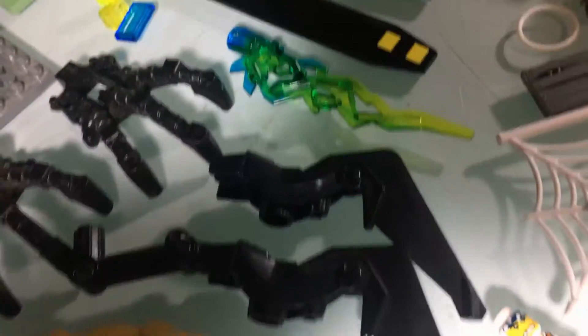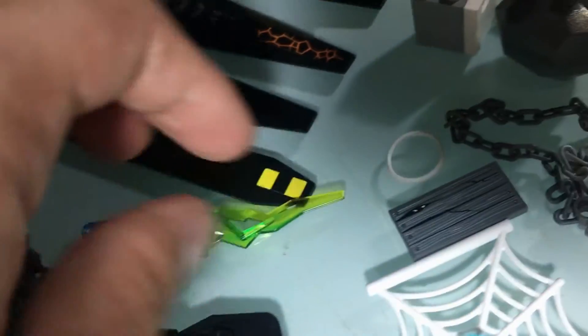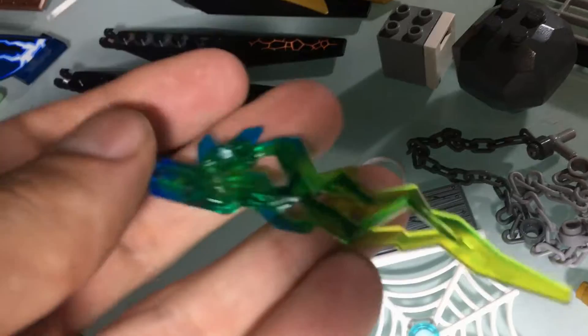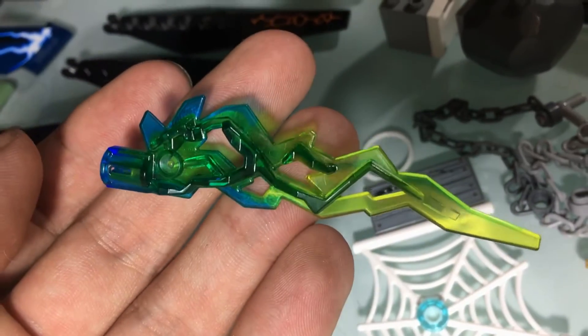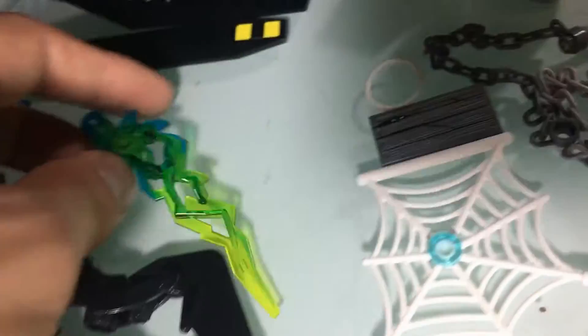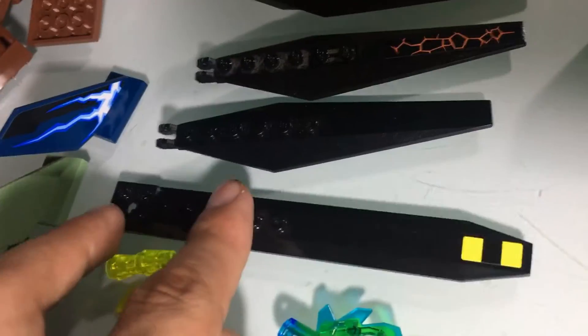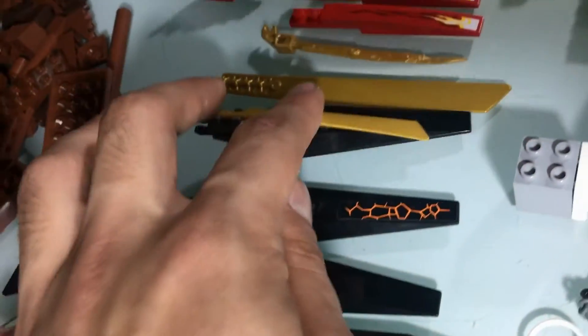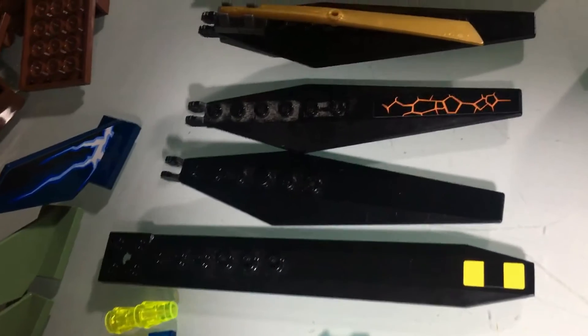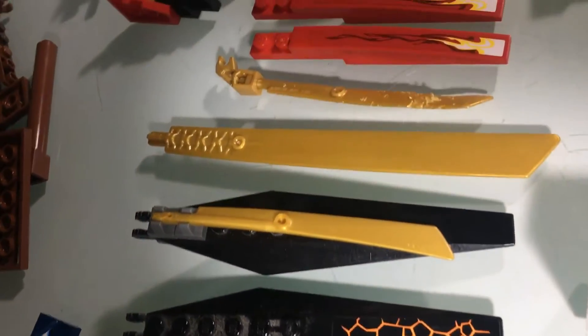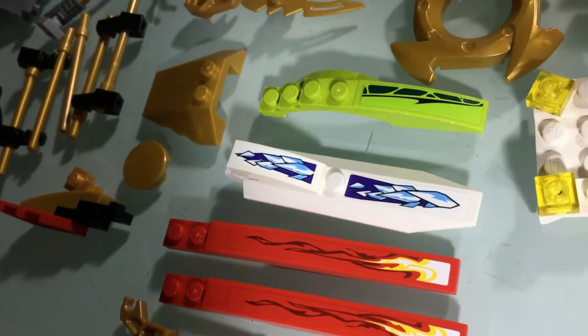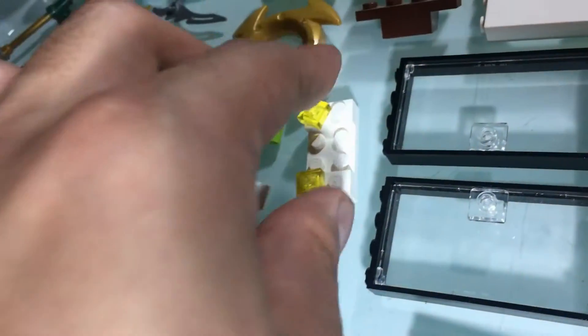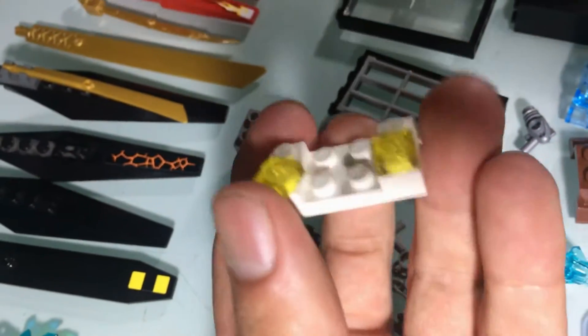Then some other dragon pieces, these feet bits, I don't know what these bits are but they're definitely from like Ninjago or something. I like this because it's sort of clear and I like the colors. These were probably like, I reckon these are all like from dragon wings in Ninjago so they're pretty cool. I'm sure I'll be able to do something with those.